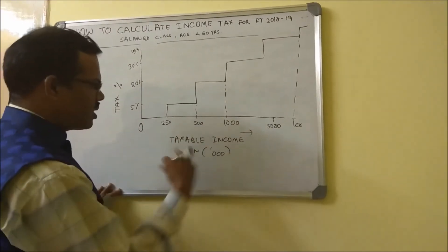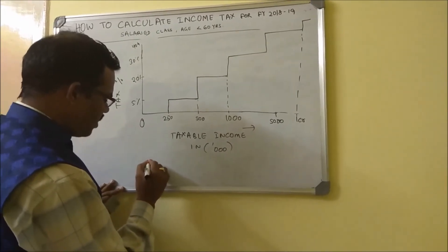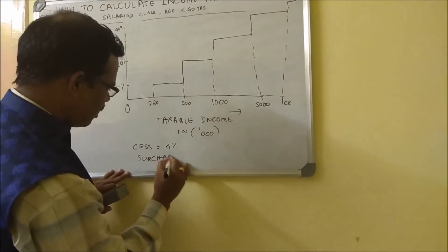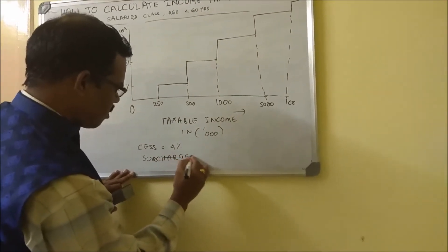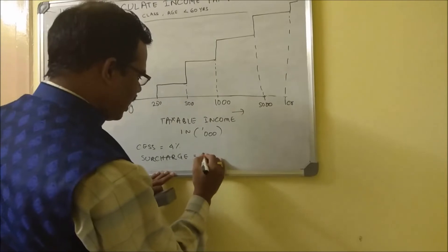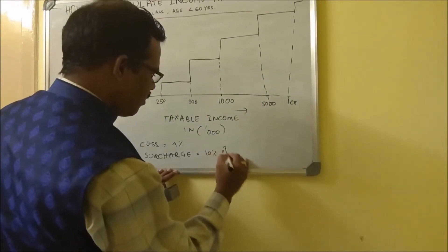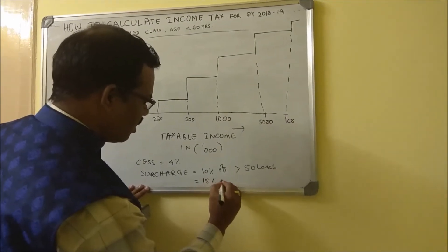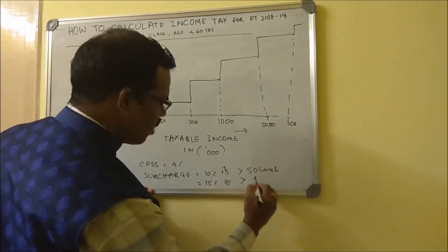On top of this tax calculation, you have cess - cess is 4 percent. Surcharge is 10 percent if income is beyond 50 lakh, and 15 percent if income is beyond one crore.